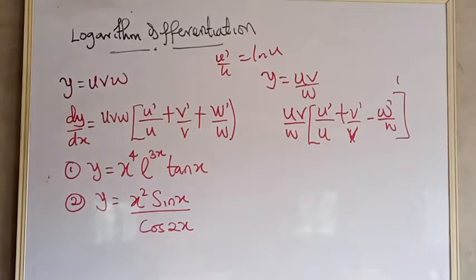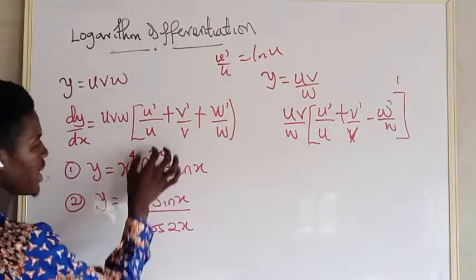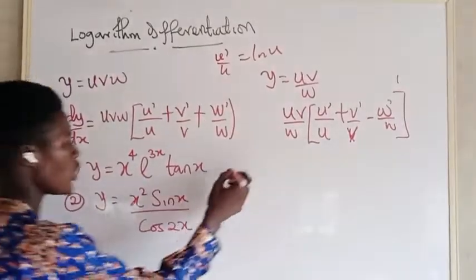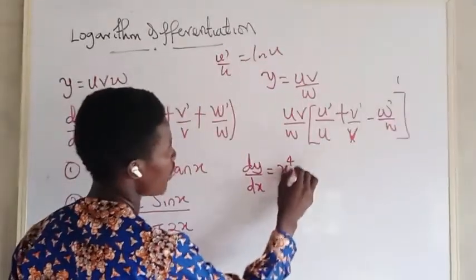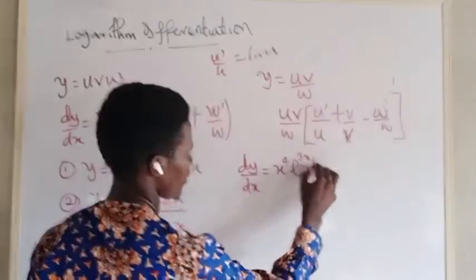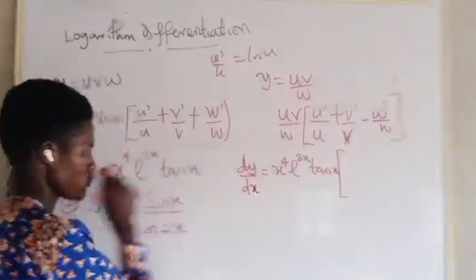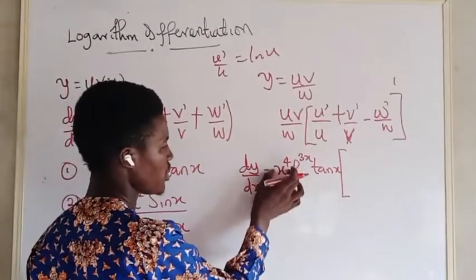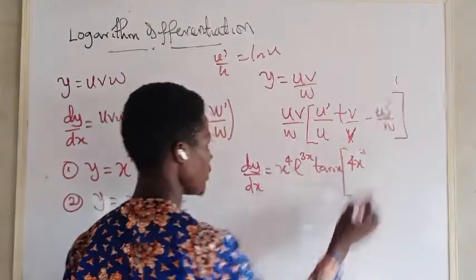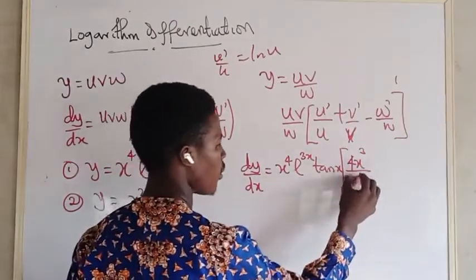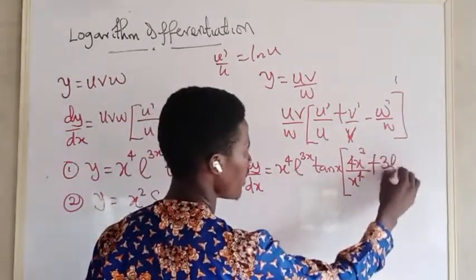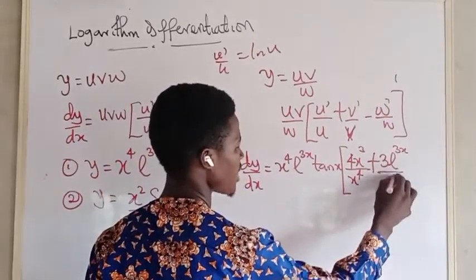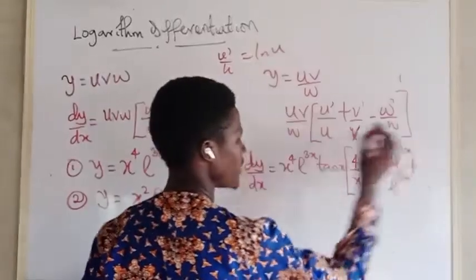Let's solve these examples. Looking at the first question, we have y equals x to the power 4, times e to the power 3x, times tan x. To solve: dy/dx equals x⁴ · e^(3x) · tan(x), multiplied by the bracket. Differentiating x⁴ gives 4x³, so we write 4 over x. Differentiating e^(3x) gives 3, so we write plus 3.